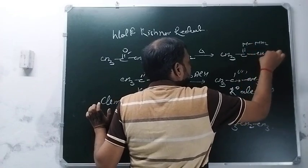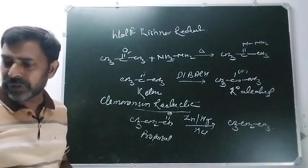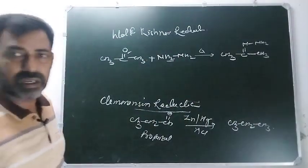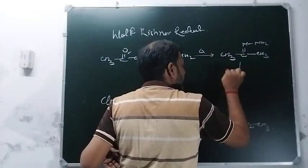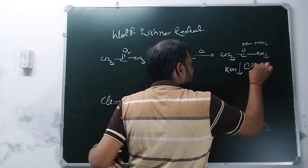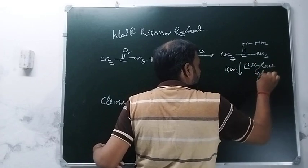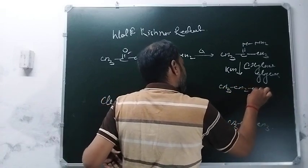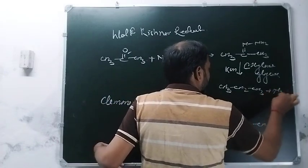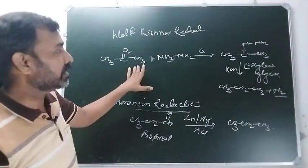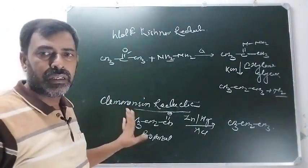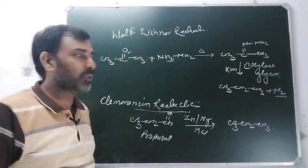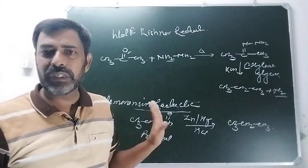और जब हम इसे further treat करेंगे potassium hydroxide से in presence of ethylene glycol (KOH + ethylene glycol), तब यह बनाएगा CH3 CH2 CH3 और साथ में nitrogen gas निकलेगी। Then this reaction is called Wolf-Kishner reduction. Both Clemmensen and Wolf-Kishner are reduction processes - both have the same reactants as well as the same product.